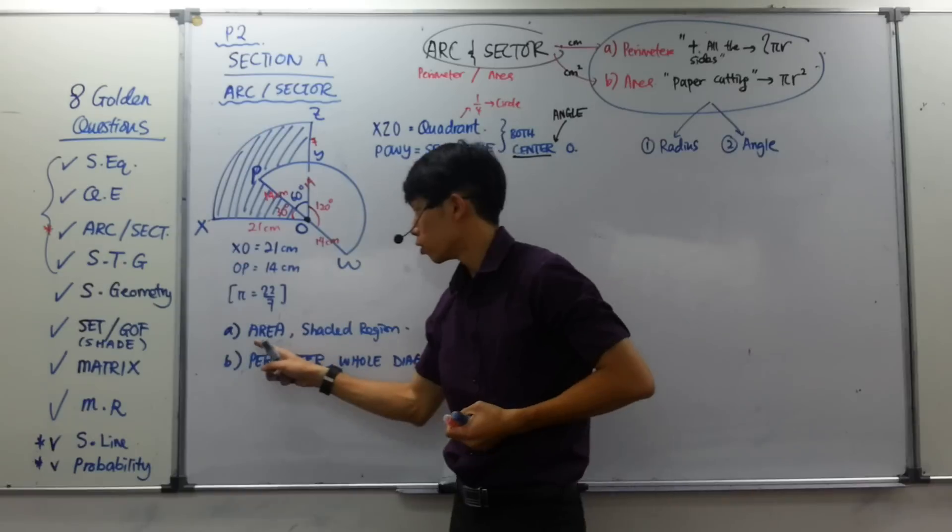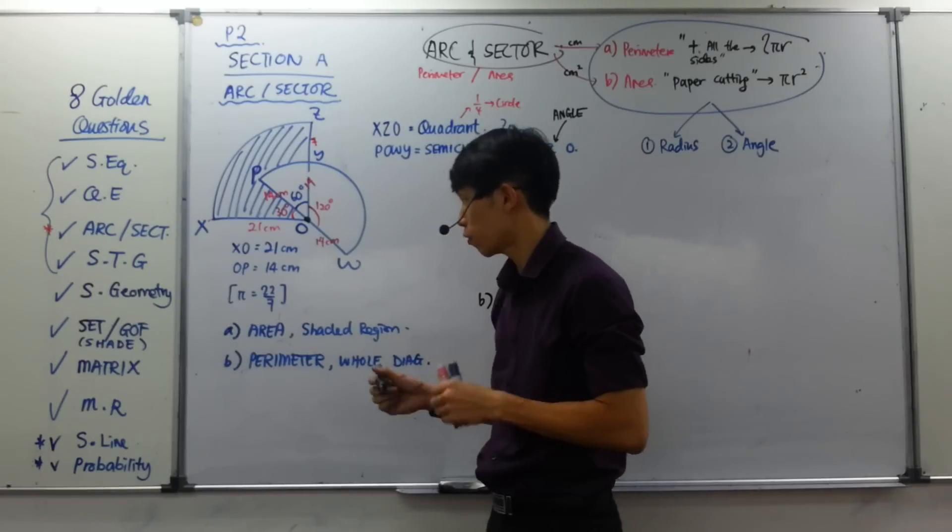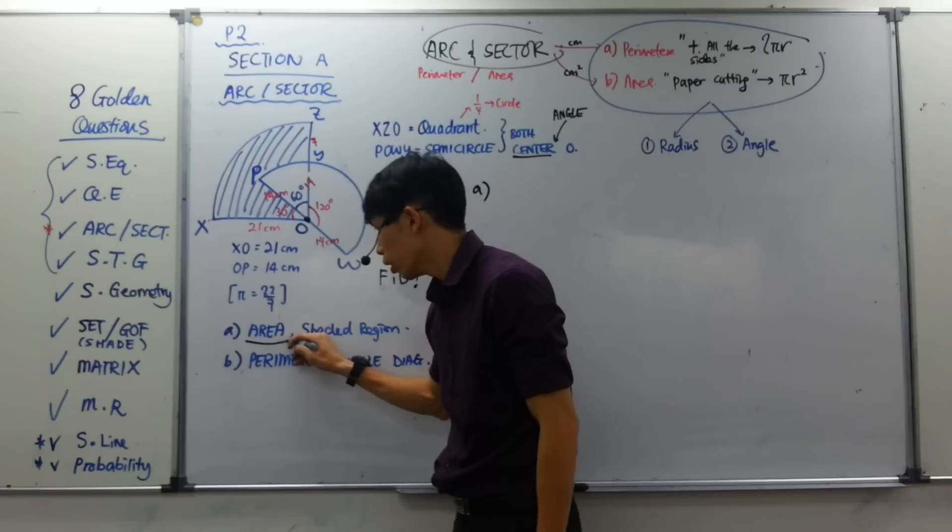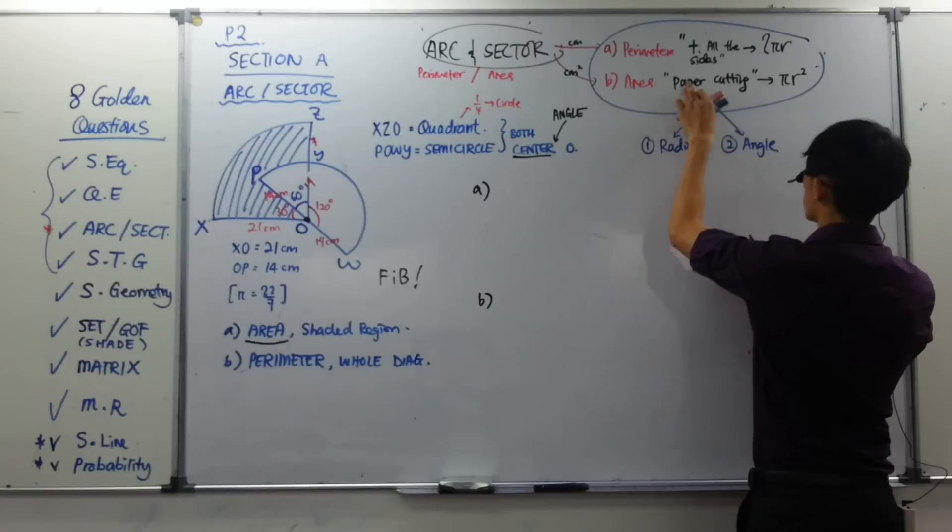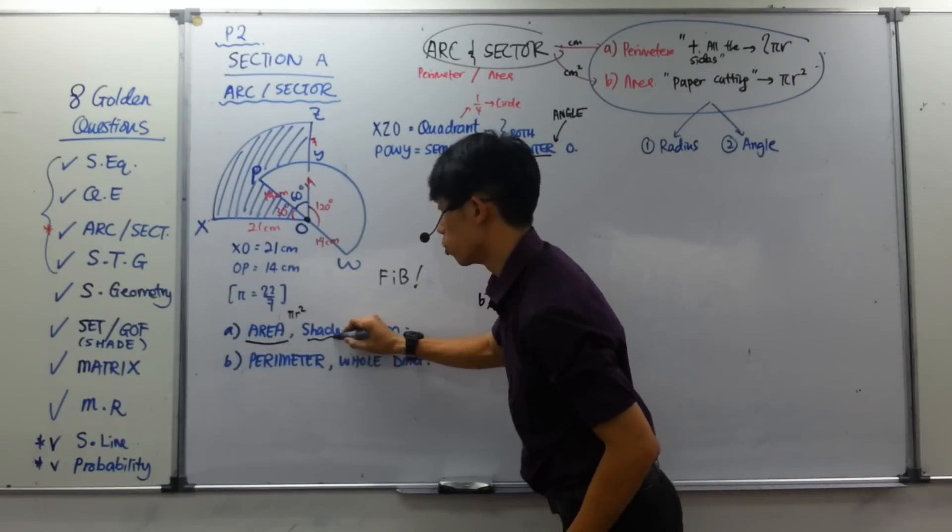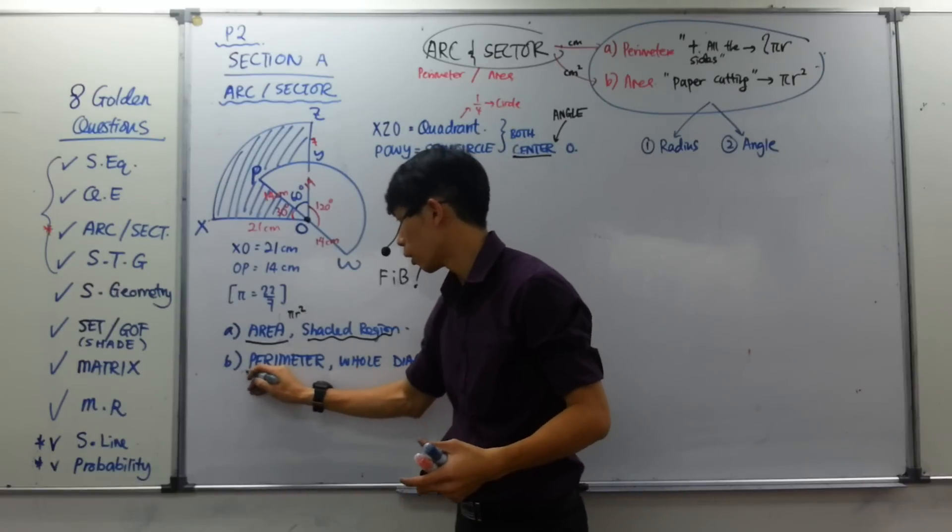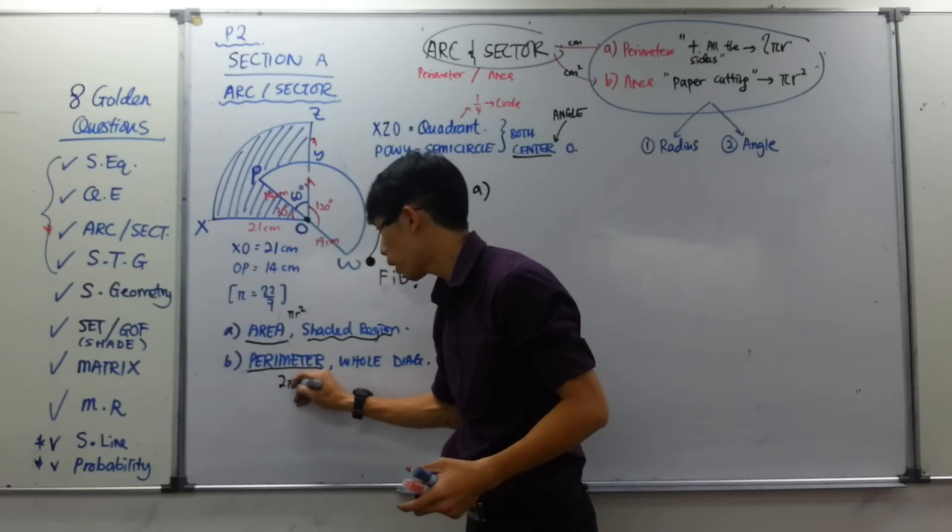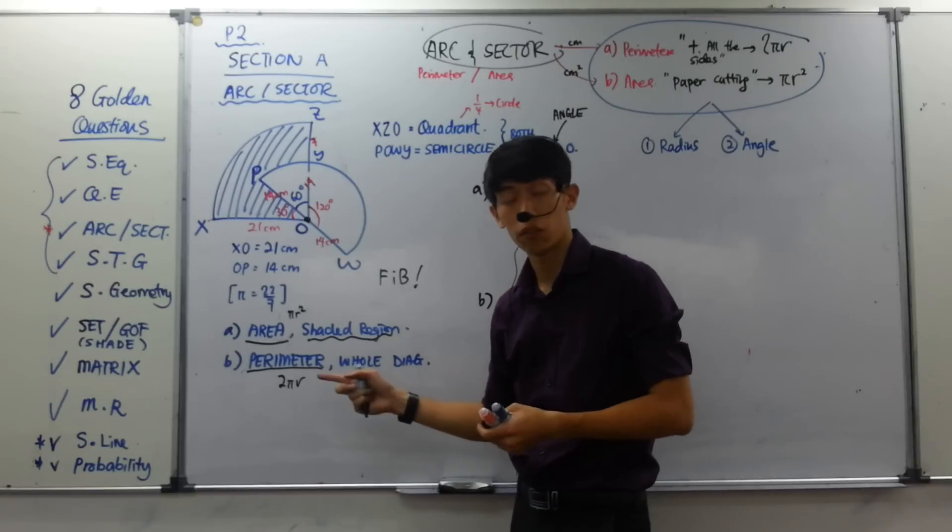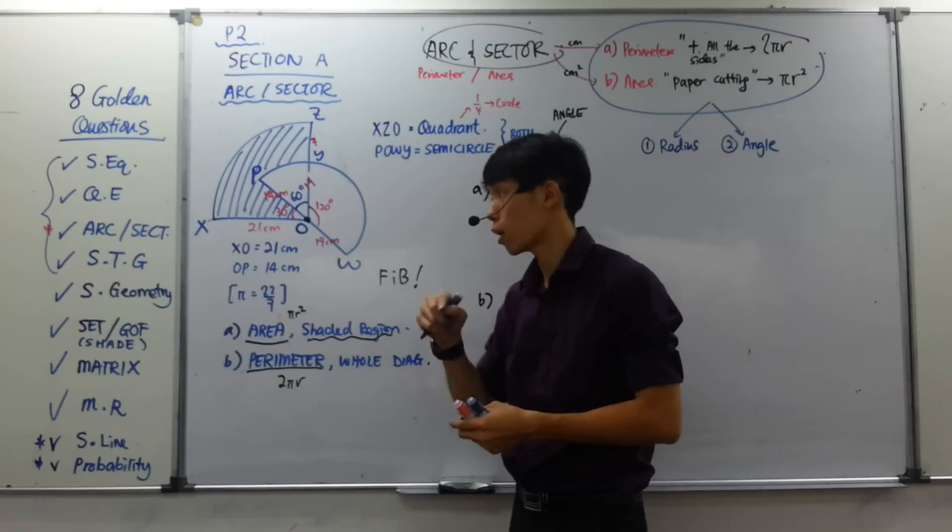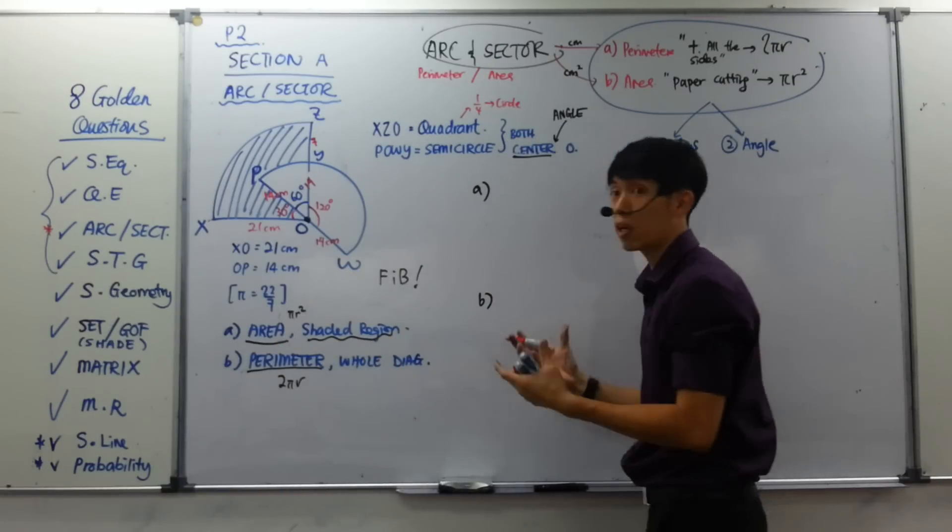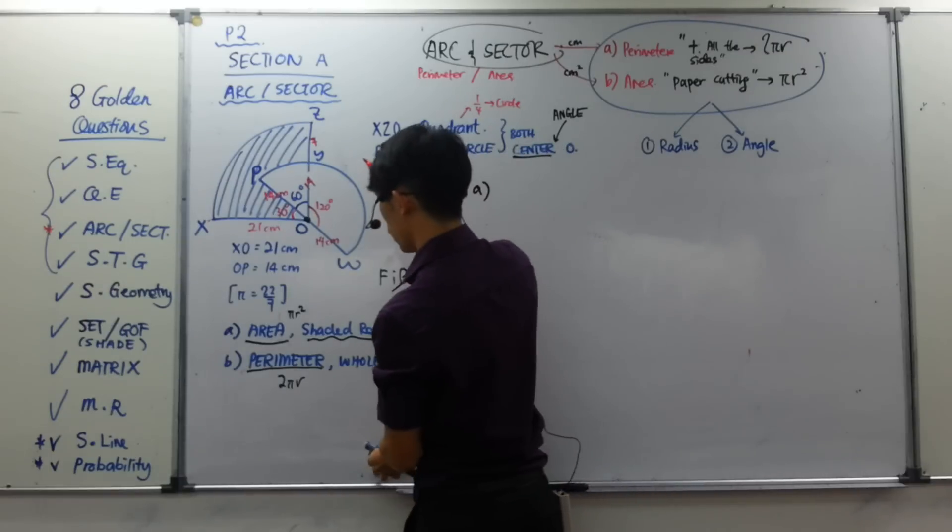So come to the questions and solve all the keywords. And start fill in the blanks. FIP, fill in the blanks. Area. Let's refer here. Area, paper cutting, pi R squared. Let's put it here, pi R squared. And don't forget shaded region. You have to cut it off some part of it. And perimeter is 2 pi R. Whole diagram. It means the whole thing of course. And don't forget perimeter, you have to add everything. I mean as in sides. Add everything. Let's look at part A. Area of the shaded region. Paper cutting.